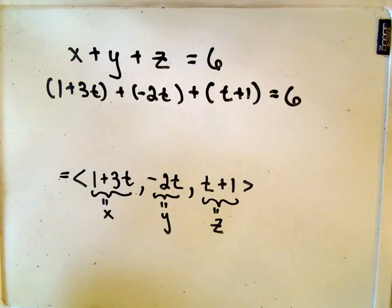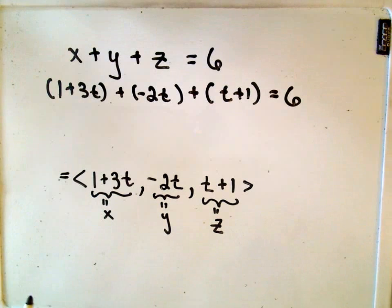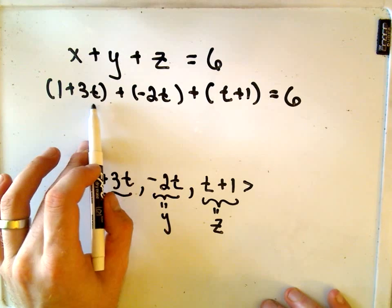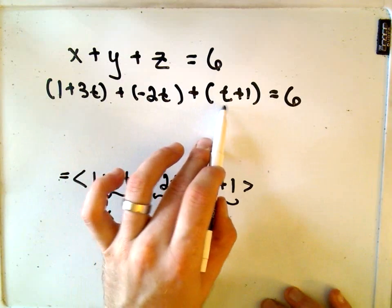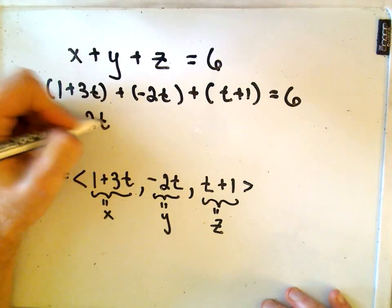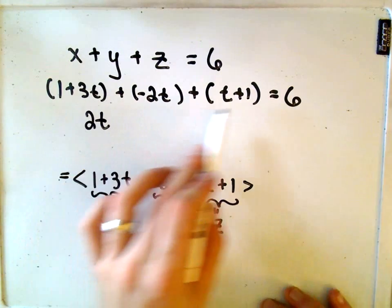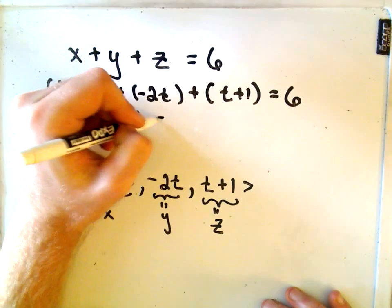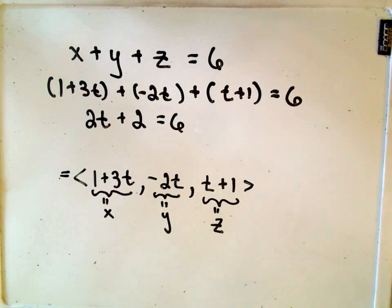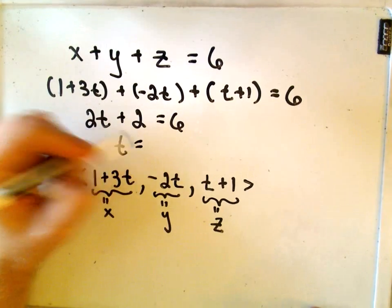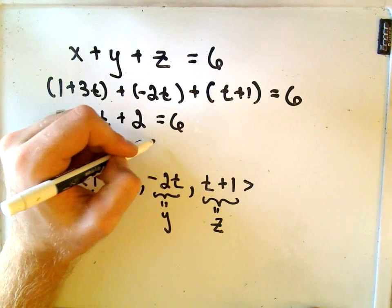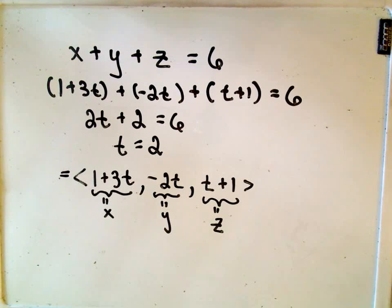Okay, so let's see if we can manage the arithmetic here. So 3t minus 2t would be 1t. 1t plus t would be 2t. We have 1 plus 1, so that looks like 2t + 2 = 6. And if we simply subtract the 2, we'll get 2t = 4. Divide by 2, we'll simply get t = 2.